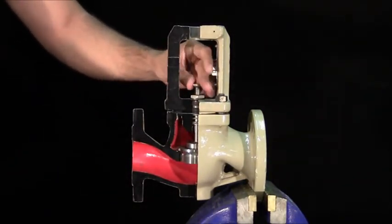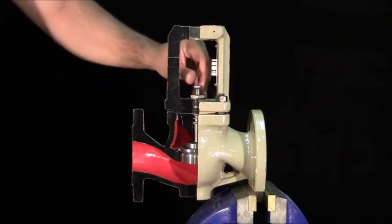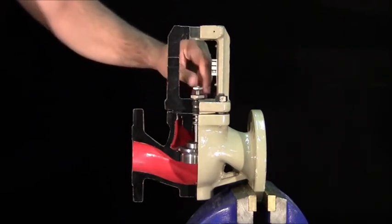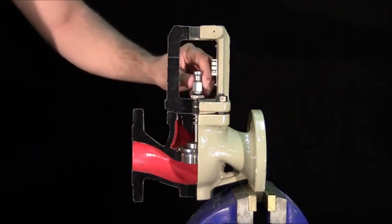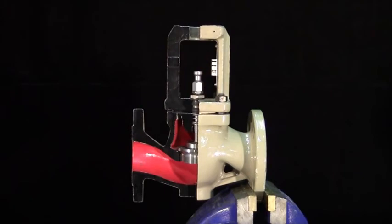The final step remaining is to loosely thread the locking nut and stem connector nut onto the plug stem. The valve is now ready for actuator installation.